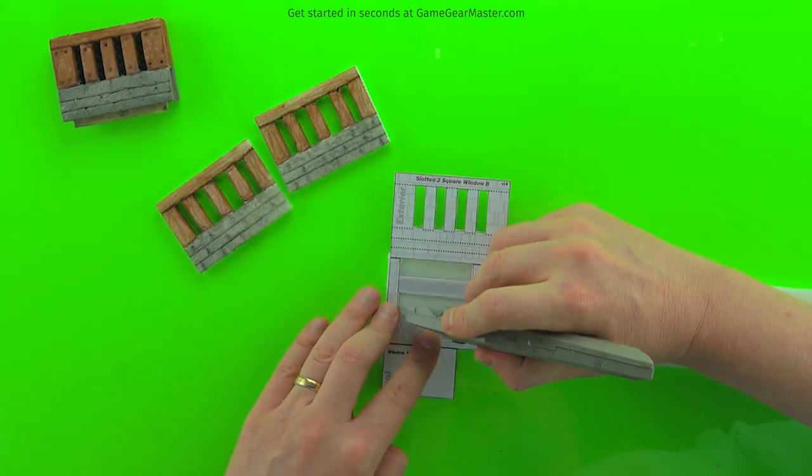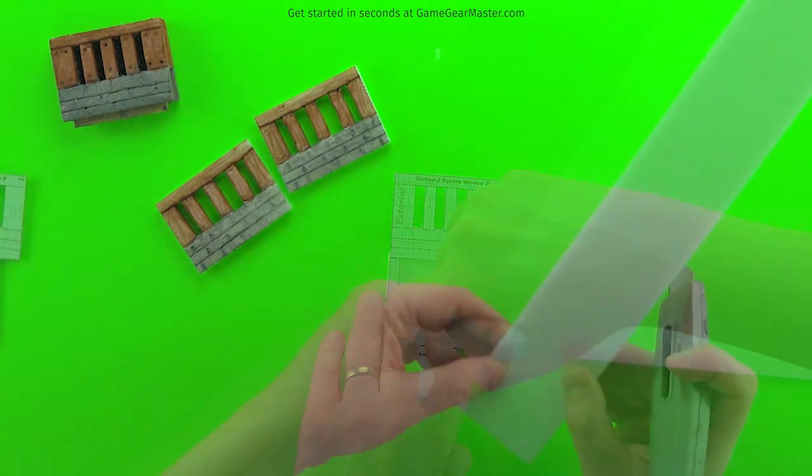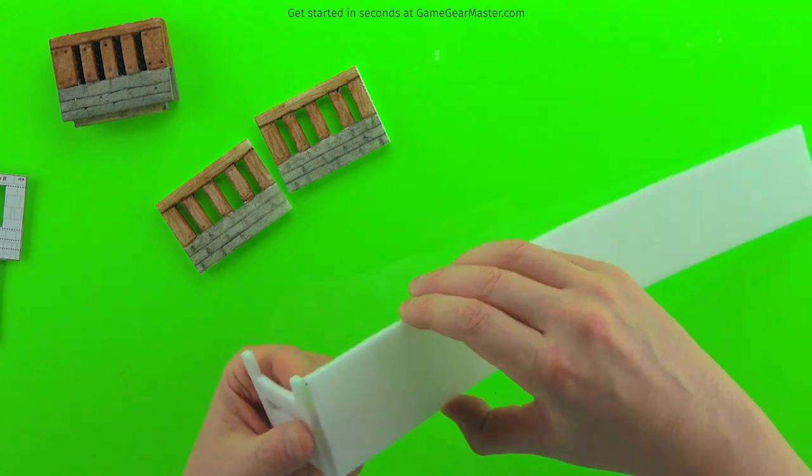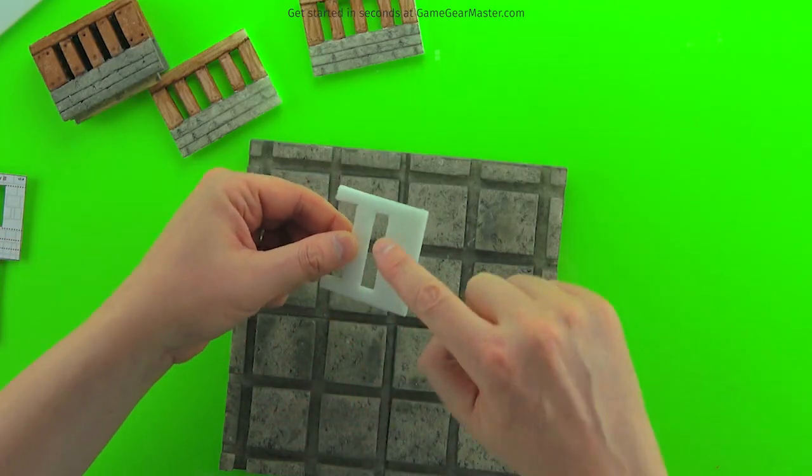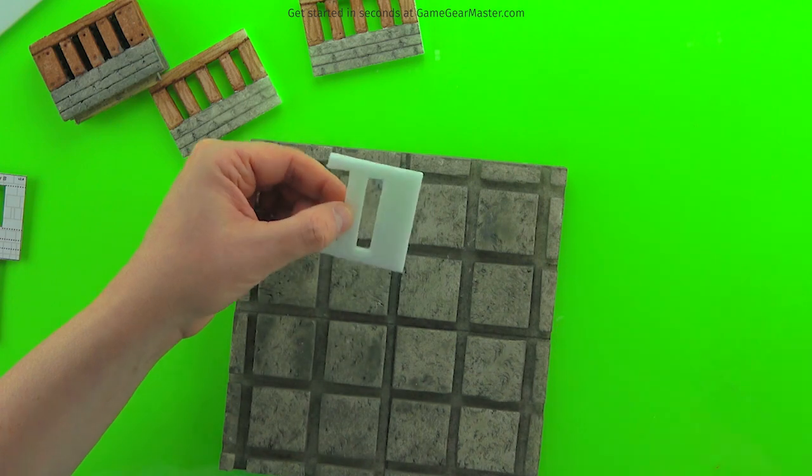Now be careful when you snap this off of the strip because it can be a little more delicate than regular interior walls. Now we're going to glue, making sure not to put glue on our scaffolding.